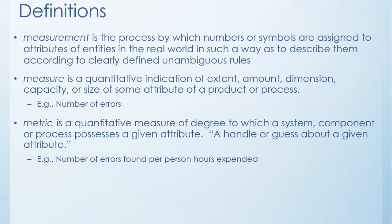So just three quick definitions before we get on to anything. Measurement is the process by which numbers or symbols are assigned to attributes of entities in the real world in such a way as to describe them according to clearly defined unambiguous rules. So the key takeaway from that definition is that it's either a number or symbol. It doesn't have to be a number per se.